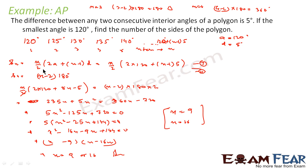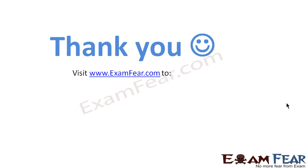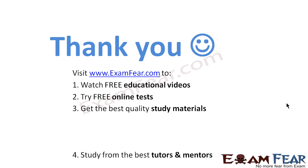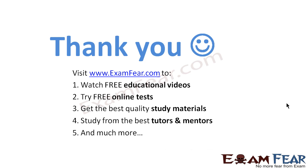In summary: we observed the angles form an AP with a equals 120 and d equals 5, took n as a variable, found Sn using the AP formula, equated it with the polygon interior angle sum formula (n minus 2) times 180, and solved to get n equals 9 or n equals 16. Thank you — visit ExamFear.com to watch free educational videos, take free online tests, and access the best quality study materials.